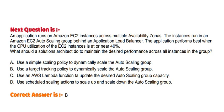Option A: Use a simple scaling policy to dynamically scale the Auto Scaling group. Option B: Use a target tracking policy to dynamically scale the Auto Scaling group. Option C: Use an AWS Lambda function to update the desired Auto Scaling group capacity. Option D: Use scheduled scaling actions to scale up and scale down the Auto Scaling group. The correct answer is Option B. Thank you.